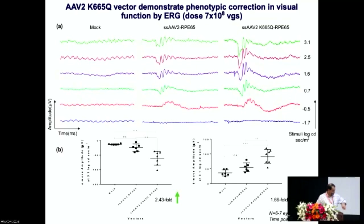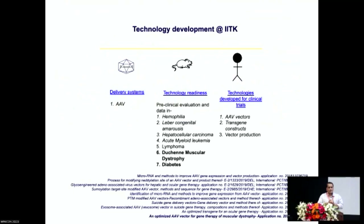What have we done with all of these things? Because I come from an institute of technology, technology development has been our forte. Beyond hemophilia and LCA2, we have also developed multiple suicide gene therapy approaches for hepatocellular carcinoma, AML — acute myeloid leukemia — and certain lymphomas. More recently, we have very interesting data in Duchenne muscular dystrophy as well as diabetes. We have been developing a consortium of IPs so that we can indigenously produce these vectors and knock off two or three zeros from the price that is currently available.